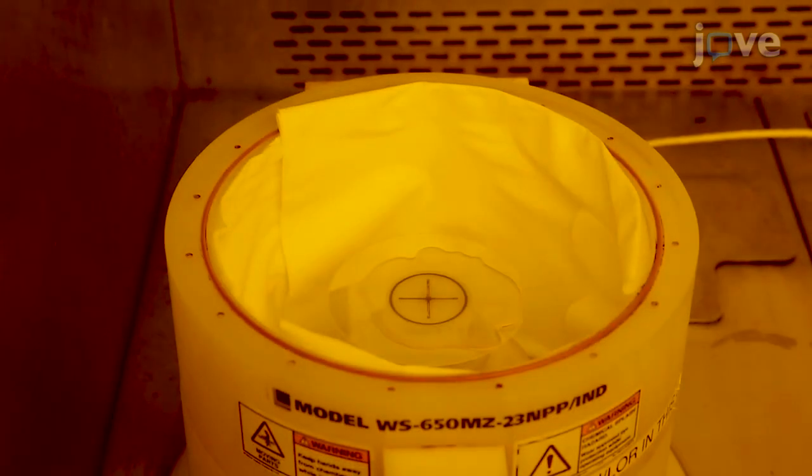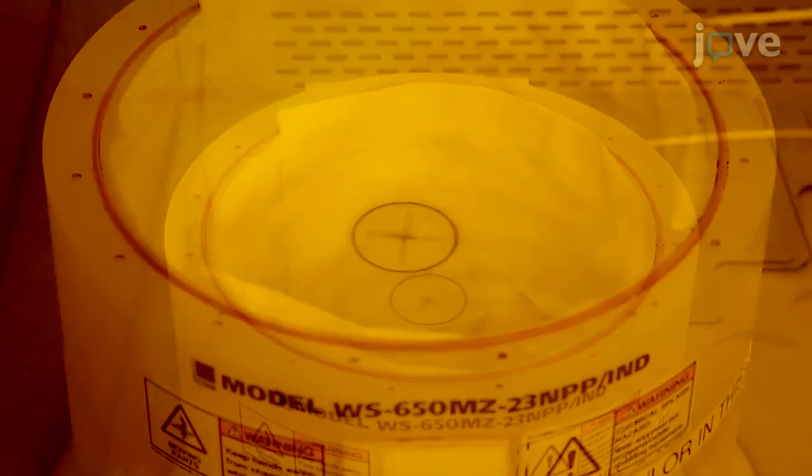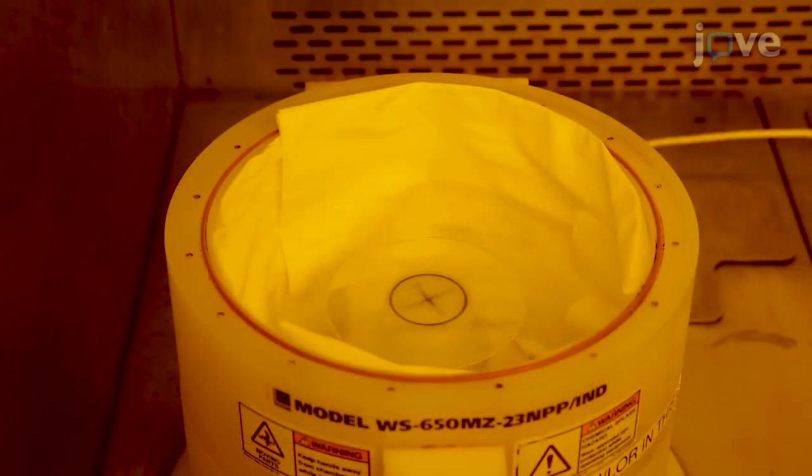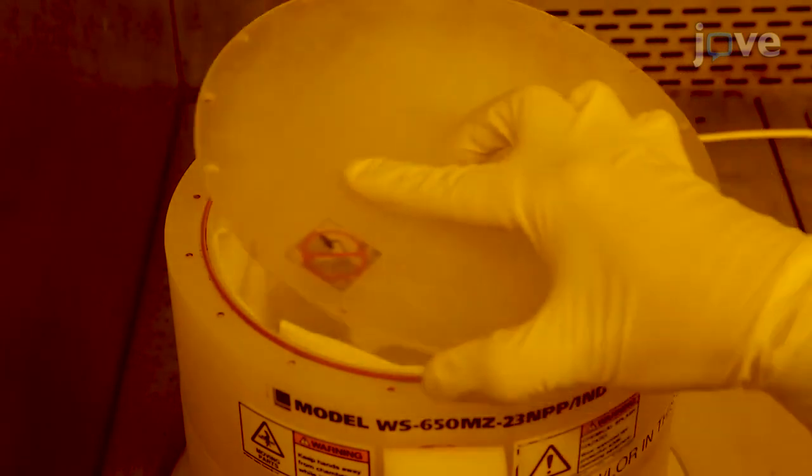To produce a photoresist thickness of approximately 1.3 micrometers, execute the following program on the spin coater: 500 RPM with an acceleration of 3000 RPM per second for 5 seconds, followed by 3500 RPM with an acceleration of 3000 RPM per second for 40 seconds.